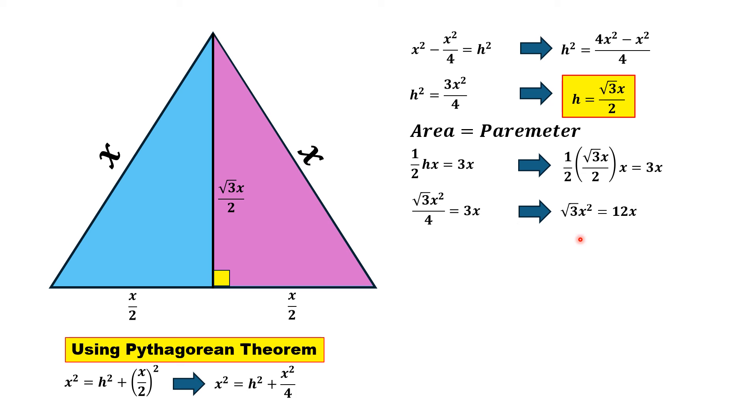Taking 12x to the left side, we have √3x² - 12x = 0. Taking x as common, we have x(√3x - 12) = 0. From here, either x = 0 or √3x - 12 = 0.